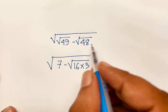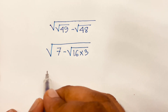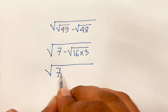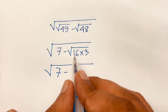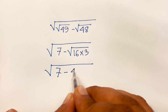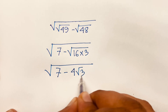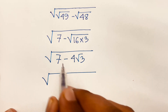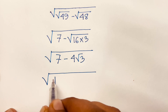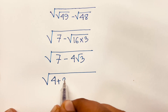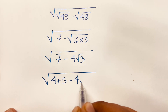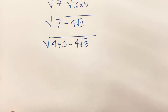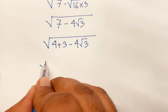Since 16 times 3 is 48, we get √(7 minus √16 · √3), which is √(7 minus 4√3). Now rewrite 7 as 4 plus 3, so it becomes √(4 plus 3 minus 4√3).